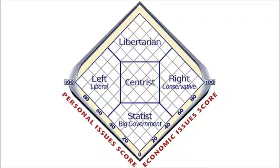Second, humans have existed in anatomically modern form for about 200,000 years, but city-states have existed for less than 10,000 years, and nation-states have existed for only 5,000 years. Thus, for the vast majority of humanity's existence, people lived in stateless societies.